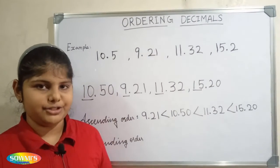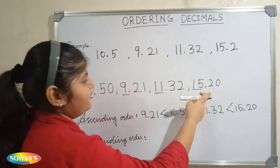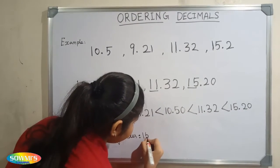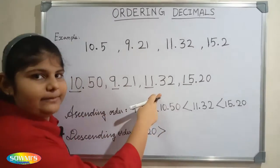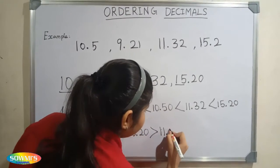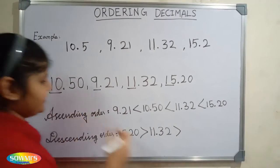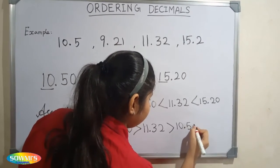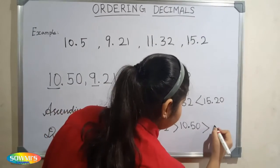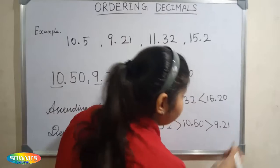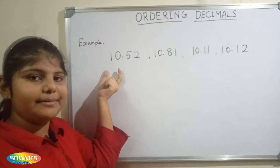Descending order means larger number to smaller number. Here the largest number is 15, so 15.20 comes first, next 11.32, next 10.50, and 9.21. Now let us see one more example where the whole number part is the same.